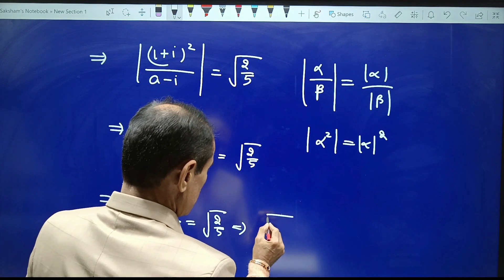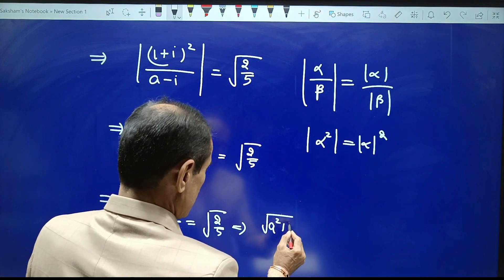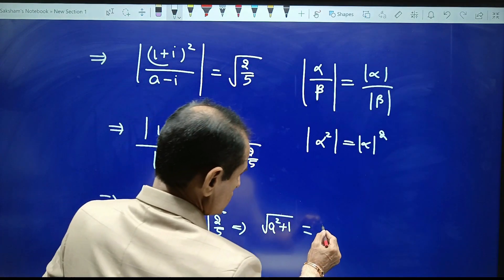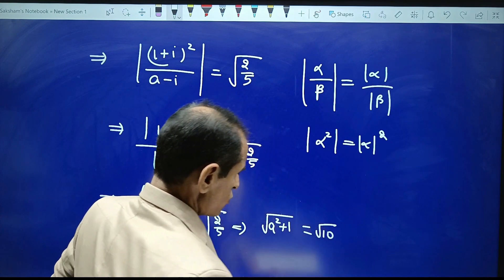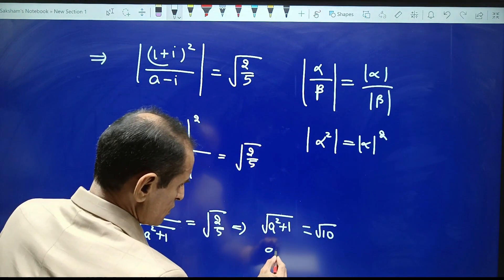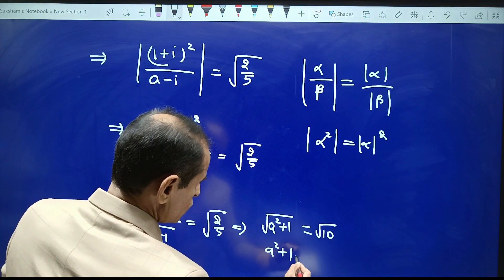That is, I get √(a²+1) = √10, which means a²+1 = 10.